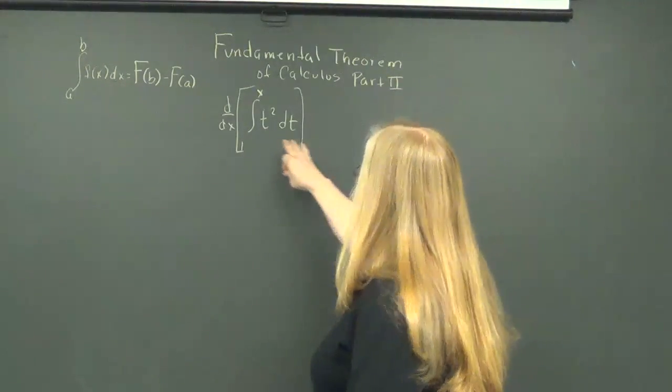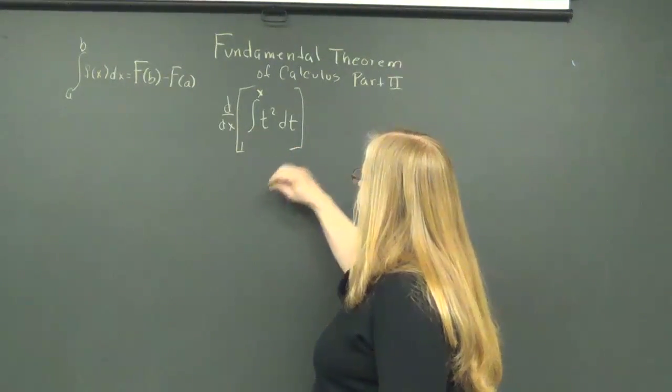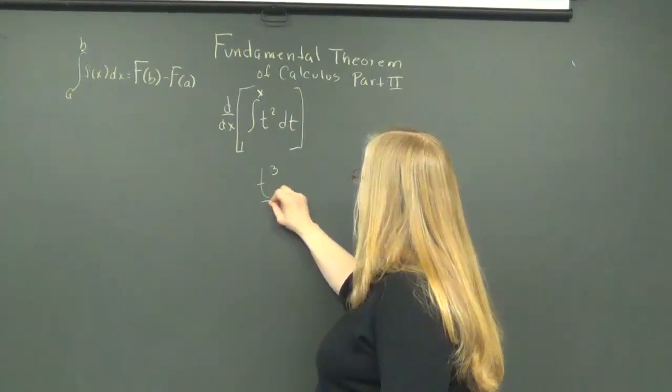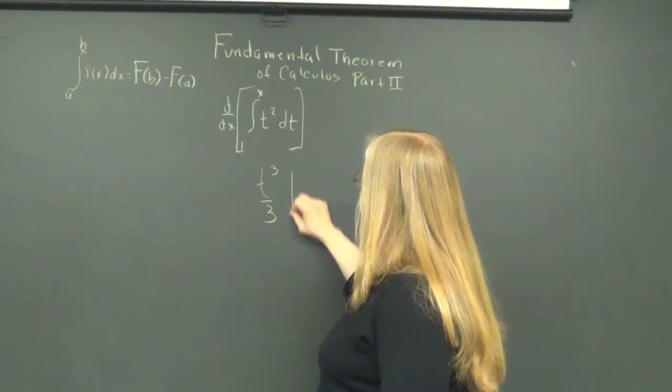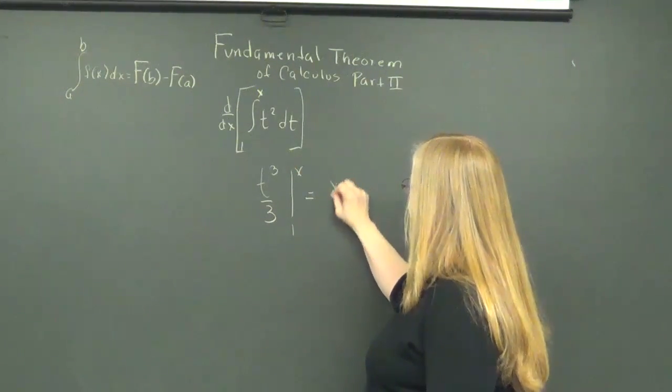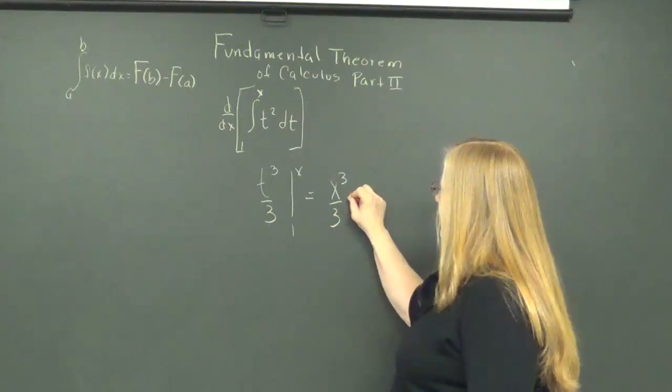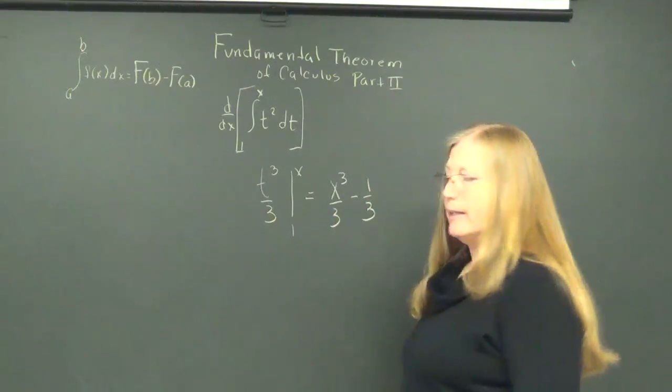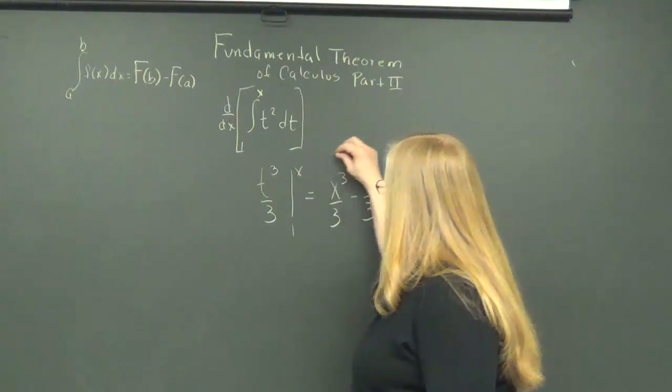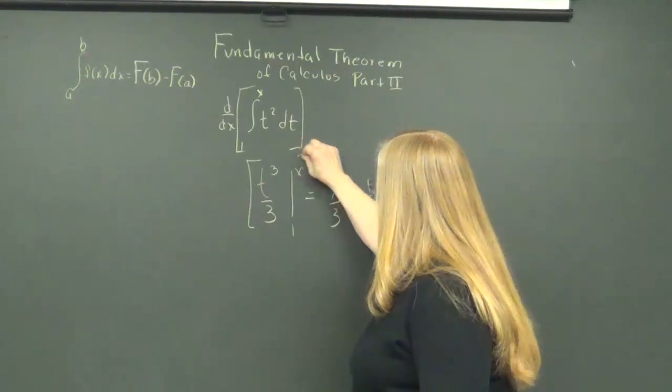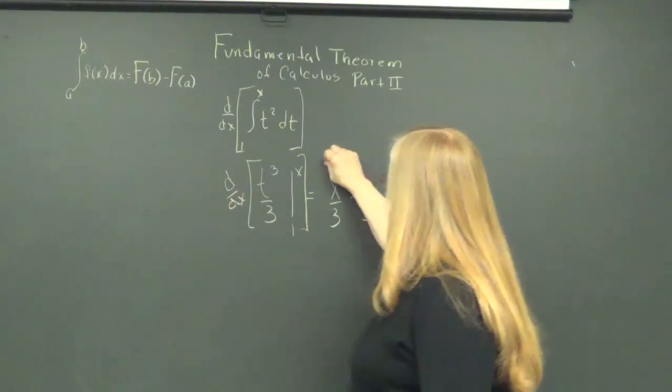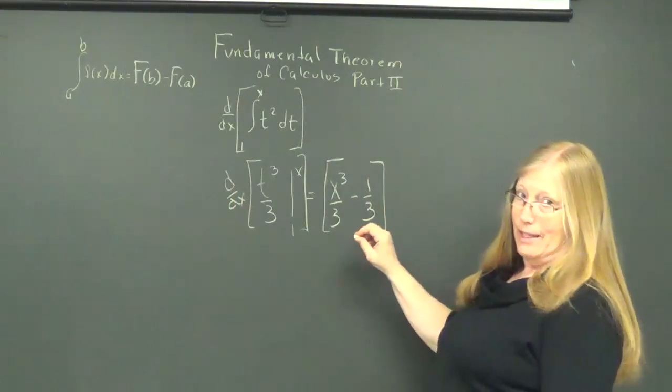So I'm going to do this first, and when I take the integral of t squared, I get t cubed over 3, and I'm going to substitute in the x value first, and then the 1 subtracted. And notice, I have to find the derivative of all that, which is the derivative of all this.